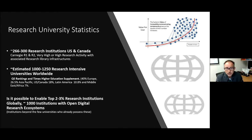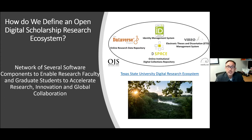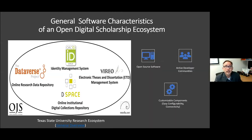These are institutions beyond the few elite universities who already possess these ecosystems. How do we define an open digital scholarly research ecosystem? We define this here at Texas State as a network of several software components to enable research faculty and graduate students to accelerate research, innovation, and global collaboration. Shown to the right is an example of the Texas State University digital research ecosystem.